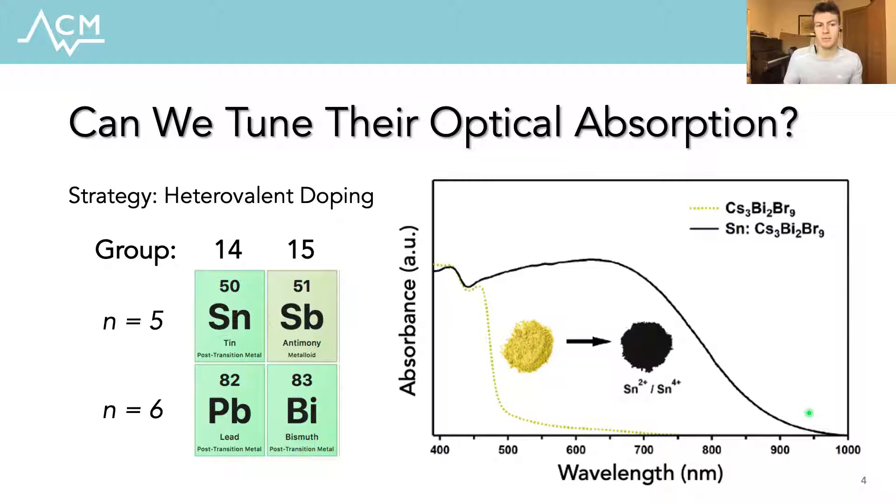We employed a heterovalent doping strategy substituting a large portion of bismuth in the material with tin, which of course, being in a different periodic group, has stable oxidation states of plus two and plus four as opposed to bismuth's plus three. In doing so, we observed a dramatic red shift of the optical absorption onset for the tin dope material, moving from about 500 nanometers to above 800 nanometers, corresponding to this drastic color change from a yellow powder to black. Evidently, this was a fascinating result and so we began a theoretical analysis of the dope material in order to elucidate the physical origin of this optical behavior.